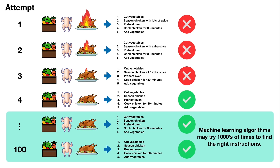They find patterns collected in data so we can use those patterns for future problems. In our chicken dish example, a machine learning algorithm might find a way to create a delicious chicken dish given the right ingredients. That way, instead of thinking about what dish we could make with what's in the fridge, the machine learning algorithm tells us.